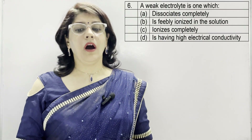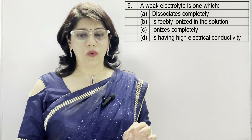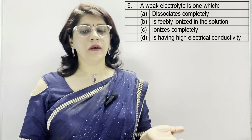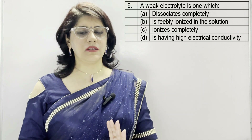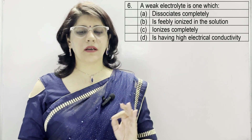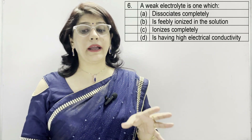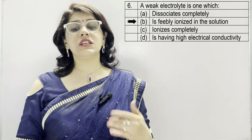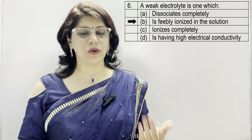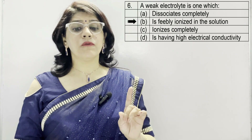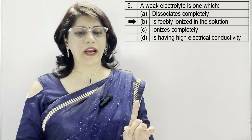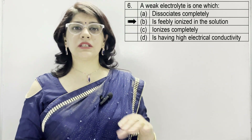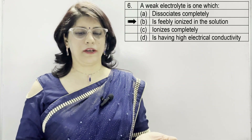In question number 6: a weak electrolyte is one which — A: dissociates completely, B: is completely ionized in the solution, C: is completely ionized completely, D: having high electrical conductivity. The correct option is B — partially ionized in the solution. That is why it is a weak electrolyte — a weak electrolyte is one which is partially ionized.